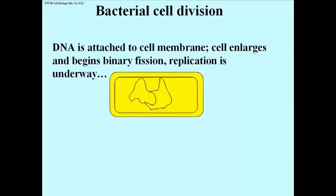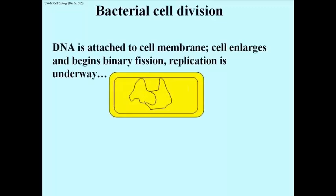As you can see here, DNA is attached to the cell membrane of bacterial cells. The cell grows and begins binary fission. Replication is already underway and what you're looking at are two ragged looking circles of DNA that are still attached to one another. Remember replication of bacterial circular chromosomes and the theta images — you're kind of looking at that in a cartoon of a living cell here.